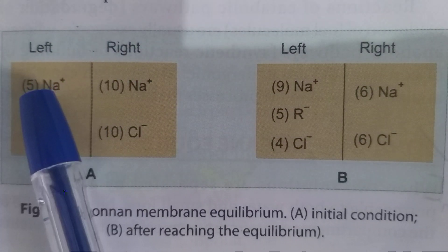The first point: the products of diffusible electrolytes in both compartments are equal. In the after-equilibrium situation, the diffusible electrolytes are Na+ and Cl-. On the left compartment you have 9 Na+ and 4 Cl-, and on the right compartment you have 6 Na+ and 6 Cl-. Multiplying: 9 × 4 = 36 and 6 × 6 = 36 — so the products are equal.